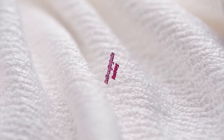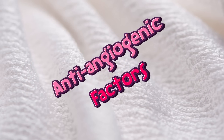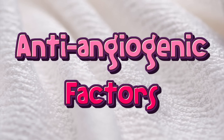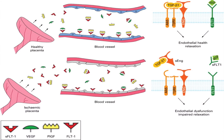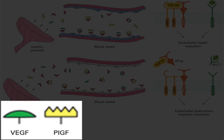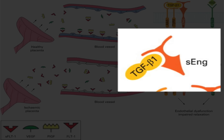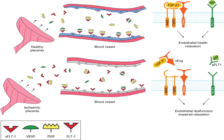The answer is anti-angiogenic factors. In normal pregnancy, soluble angiogenic factors like vascular endothelial growth factor (VEGF), placental growth factors (PLGF), and transforming growth factors beta (TGF-beta) help the blood vessels to grow and keep the endothelium healthy.